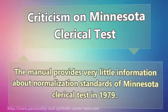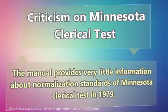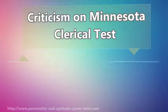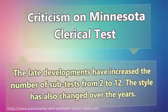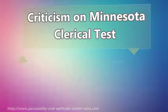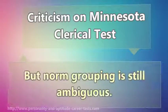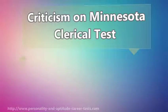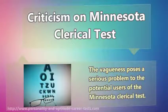The manual provides very little information about normalization standards of the Minnesota Clerical Test in 1979. The late developments have increased the number of subtests from 2 to 12, and the style has also changed over the years. But norm grouping is still ambiguous, and this vagueness poses a serious problem to the potential users of the Minnesota Clerical Test.